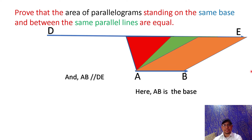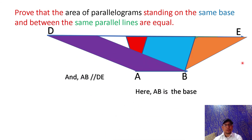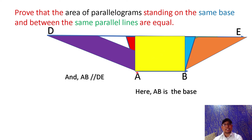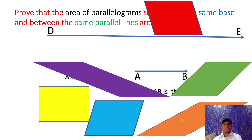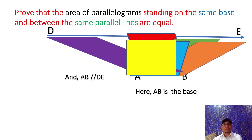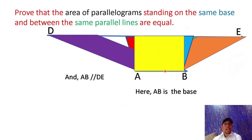Likewise, here is a brown parallelogram, a blue parallelogram, a purple parallelogram, and a yellow parallelogram. These all are standing on the same base AB and between the same parallel lines AB parallel DE. You are seeing six different parallelograms having different shapes and sides, which are all standing on the same base AB and between the same parallel lines AB parallel DE.